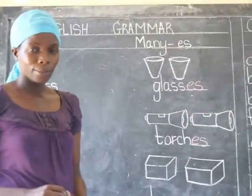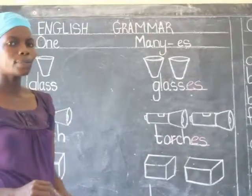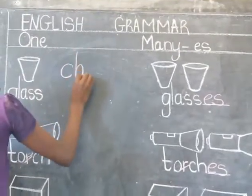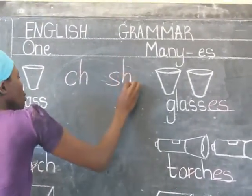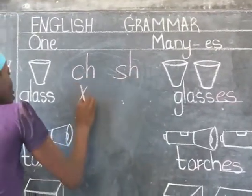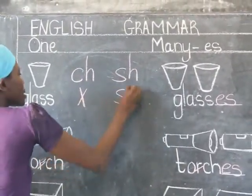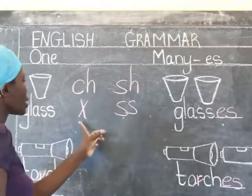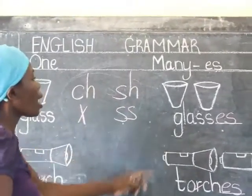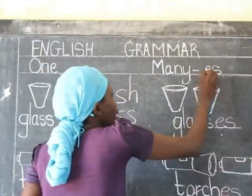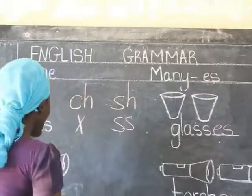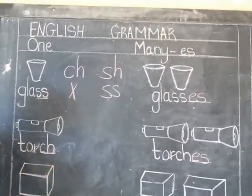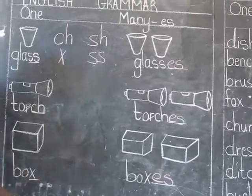Before we finish up our lesson, remember: when you see these endings — CH, SH, S, and double S — you have to add E and S. For example, here I have double S, here I have SH, and here I have S. So remember that rule.